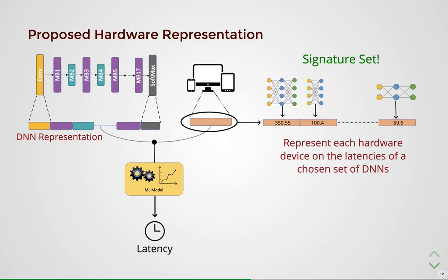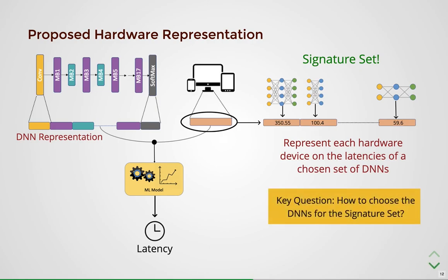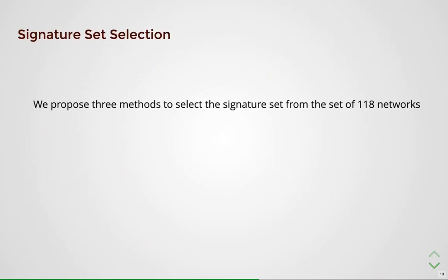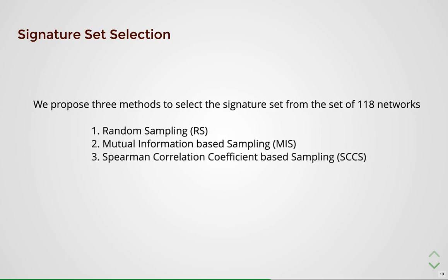This representation empirically works because latency is a complex function of all hardware and software features for a mobile device, and a good signature set sufficiently captures the different features of the device. This leads us to the key question: how to determine the set of DNNs that contribute to a good signature set representation? We propose three methods to select the signature set from all 118 networks: random sampling, mutual information-based sampling, and Spearman correlation coefficient-based sampling. More details about these methods are provided in the paper.